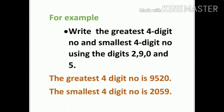When we form the smallest four digit number, we arrange the digits in ascending order. The smallest four digit number is 2059. We put zero at the 100th place because we cannot put zero at the 1000th place — it would make it a three digit number.